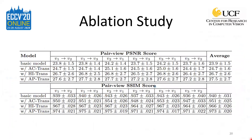We performed an ablation study to test the effectiveness of various components in our model. The four model variations tested are: the basic model, which does not include action transformation, hierarchical transformation, or appearance transformation; the second model, which adds the action transformation module only; the third model, which adds action transformation along with hierarchical transformation; and the final model, which has all these components. We observed that with the addition of each new component, the PSNR and SSIM scores both improve, which demonstrates the importance of each component to the overall network.